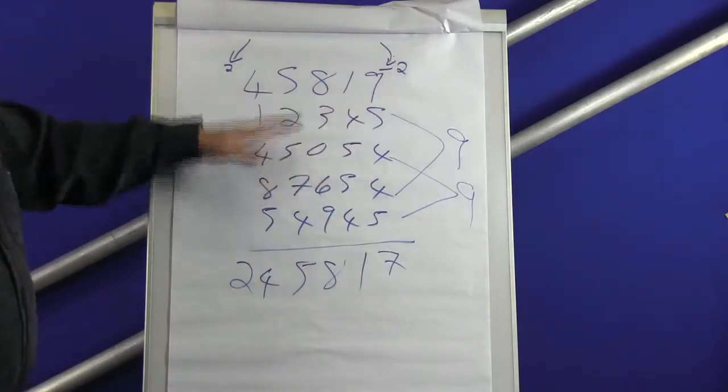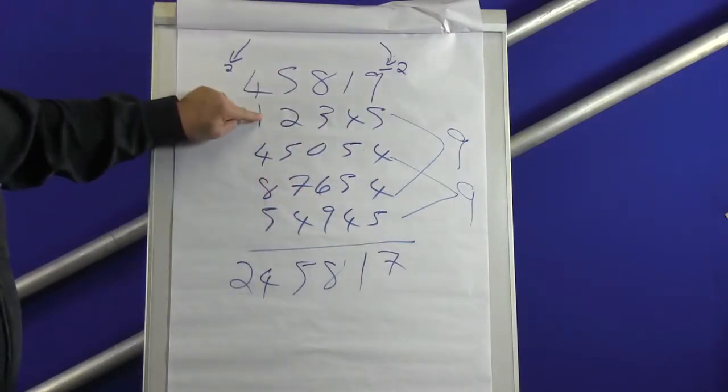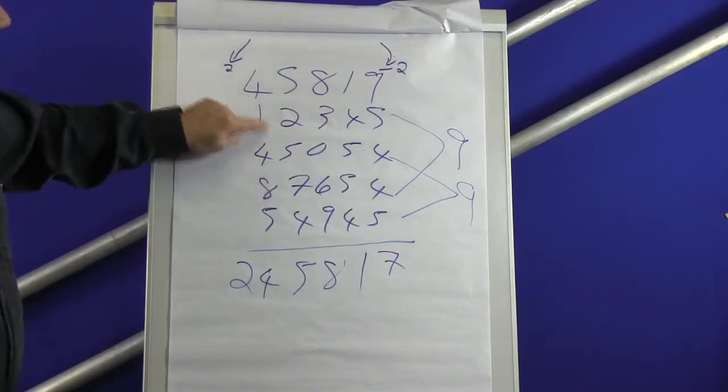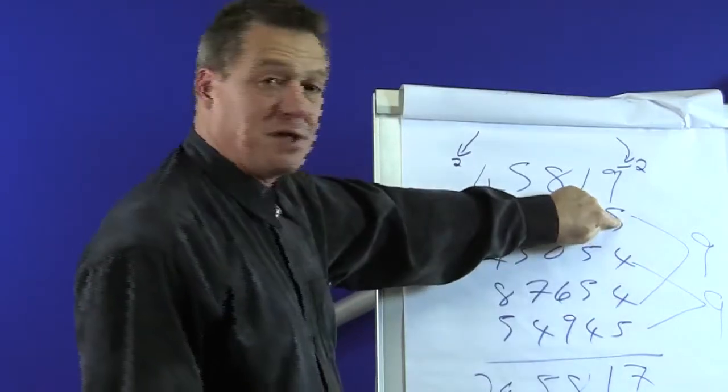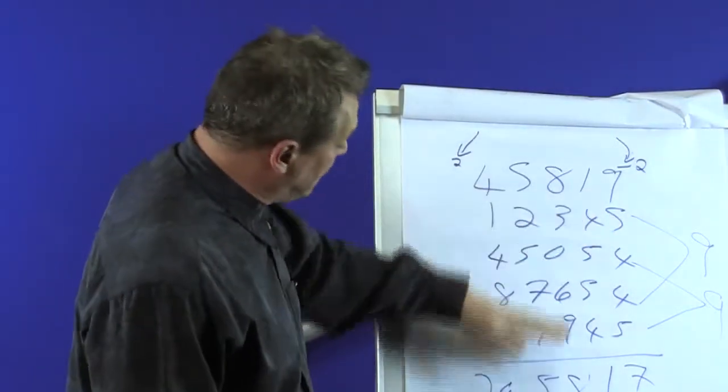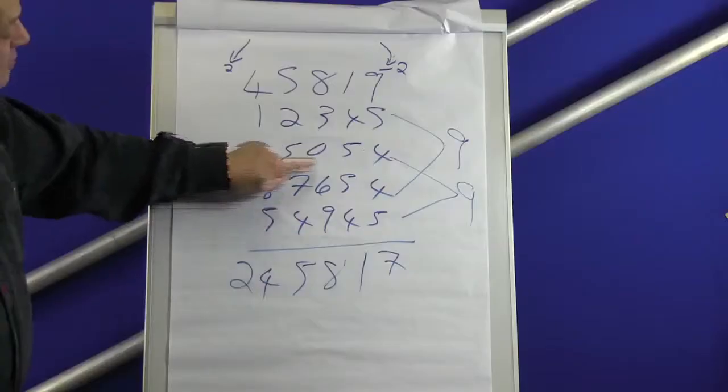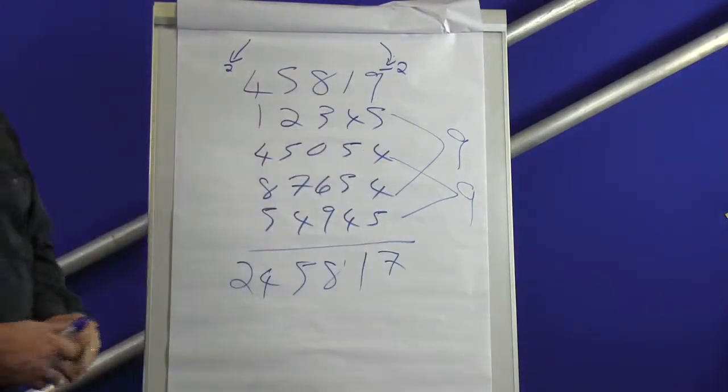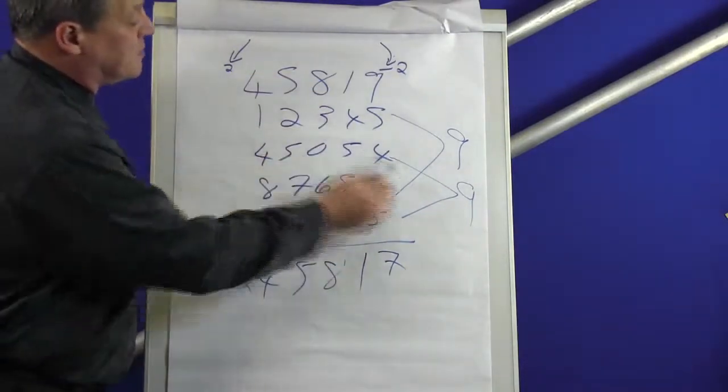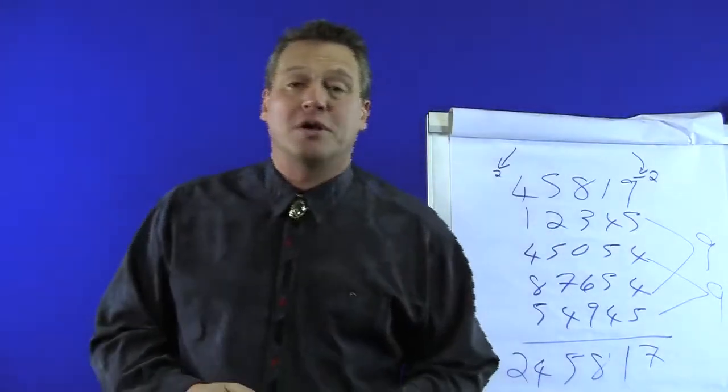The second number they've written and your first number add up to 9, and that pair adds up to 9. They've written 12345 - the first number you write is, you want the numbers that you write and their number to add up to 9. So 8 and 1 is 9, 7 and 2 is 9, 6 and 3 is 9, 5 and 4 is 9, 4 and 5 is 9. The second number I write down - again, 5 and 4 is 9, 5 and 4 is 9, 0 and 9 is 9, 5 and 4 is 9. All you're doing is your two numbers have just got to add up to 9, and then the entire trick works on its own.